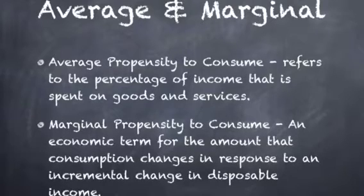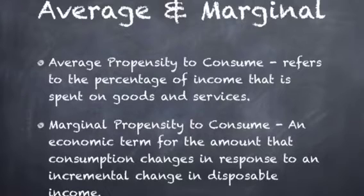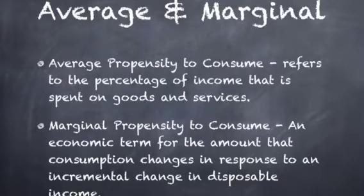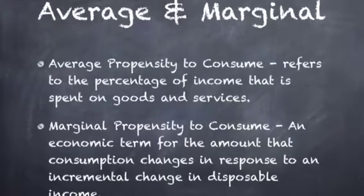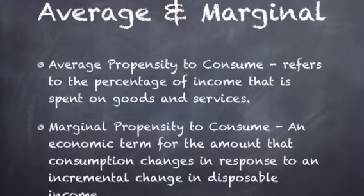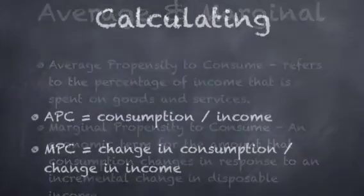Marginal propensity to consume is slightly different in the fact that it's more of a single event where you have more disposable income. So an example of this would be say if you win £500 on the lottery — it's how much of that disposable income that you spend. So it's not income earned in a job, but it's just a one-off payment or how much money you have at the end of the month after you've paid taxes or things like that.